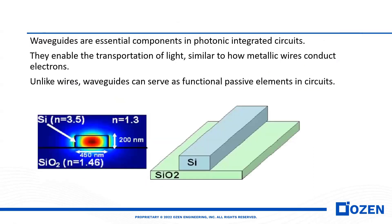Waveguides are essential components in a photonic integrated circuit — they enable the propagation of light through the circuit. This is similar to the wire in an electronics board. But the main difference between the wire and waveguides is that with waveguides, you can design passive elements in the circuits.